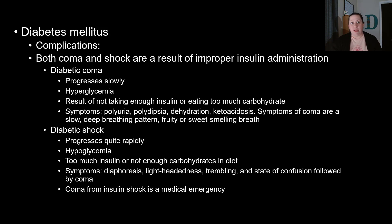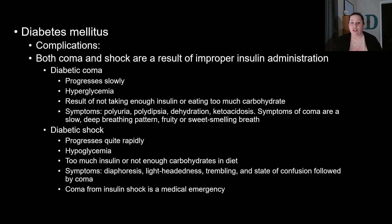It's really important to control blood sugars in diabetic patients because complications can occur very quickly. Both coma and shock can happen with improper insulin administration. Diabetic coma progresses slowly — it is due to an excessive level of glucose in the blood called hyperglycemia, resulting from not taking enough insulin or eating too many carbohydrates. The symptoms of diabetic coma include polyuria, polydipsia, dehydration, and ketoacidosis. The coma itself is characterized by slow, deep breathing and that fruity or sweet-smelling breath.